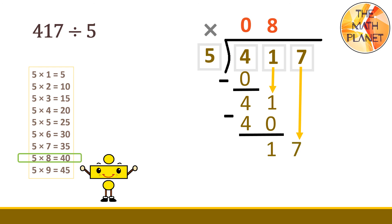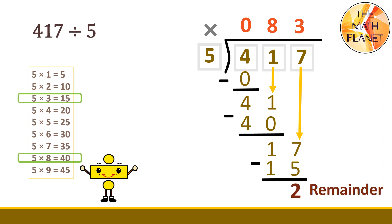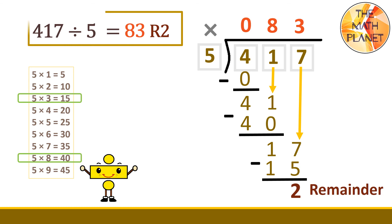What is 17 divided by 5? Use the third rule. 17 divided by 5 equals 3. Write the 3 above the 7. Then, multiply: 3 times 5 equals 15. Then, subtract: 17 minus 15 equals 2. Since we don't have any more digits to divide, our remainder is 2. And the answer to this equation is 417 divided by 5 equals 83 with a remainder of 2.